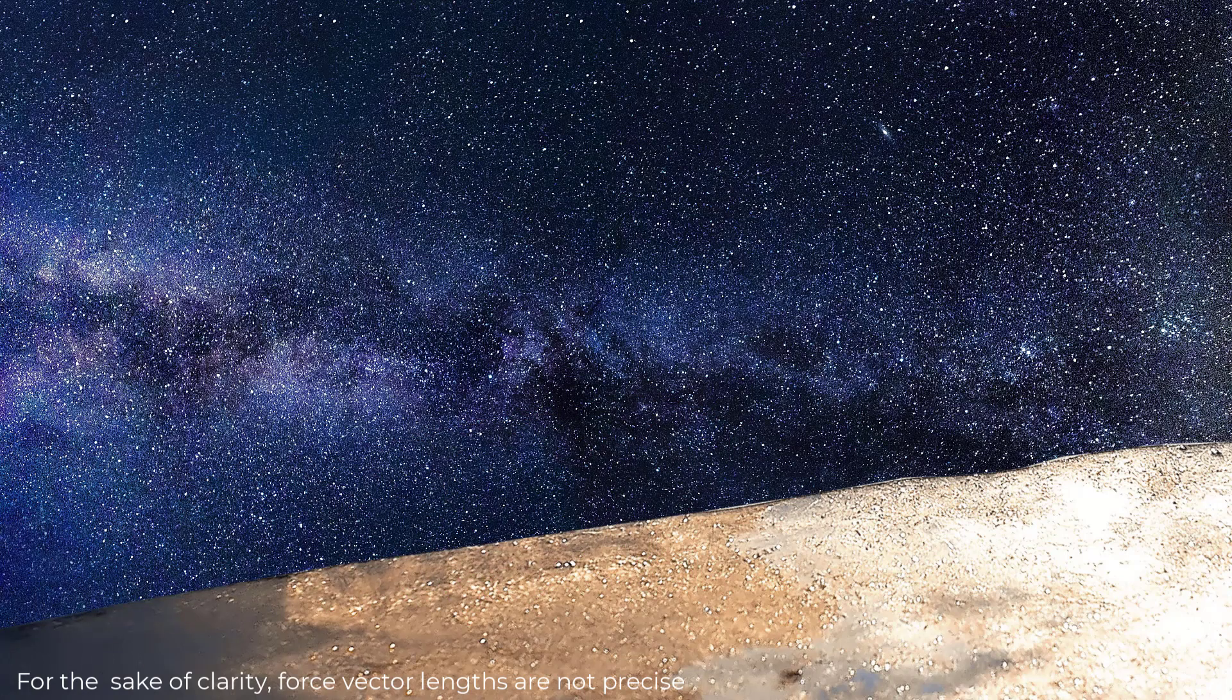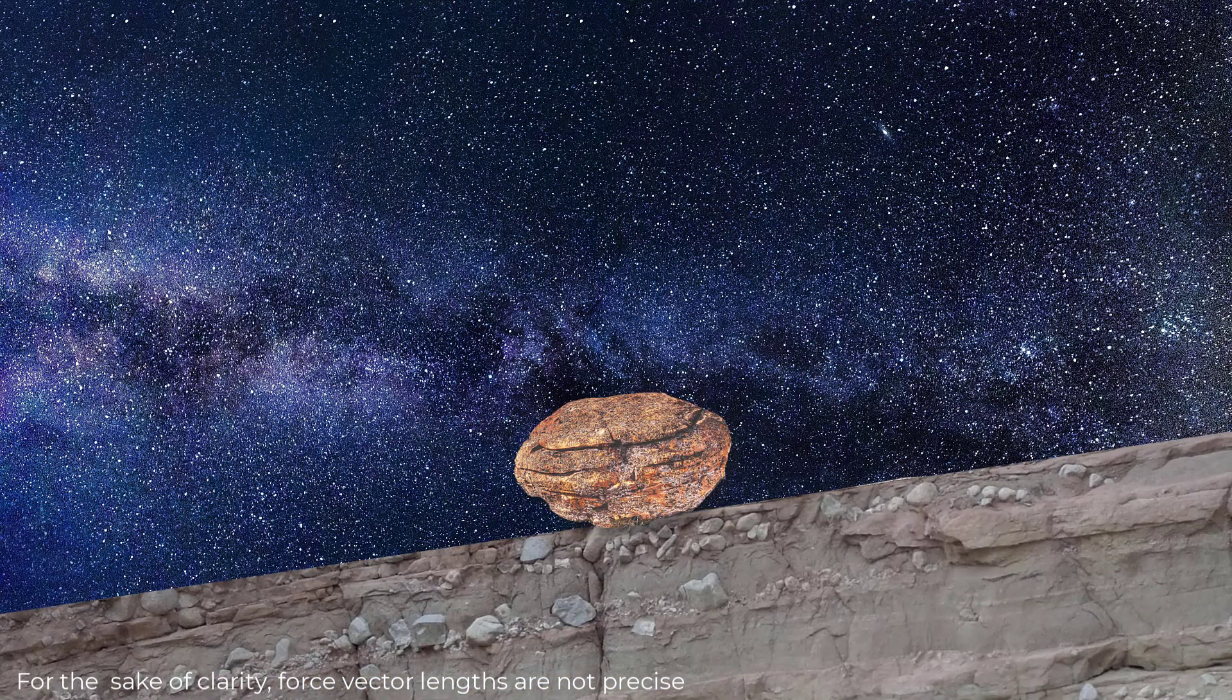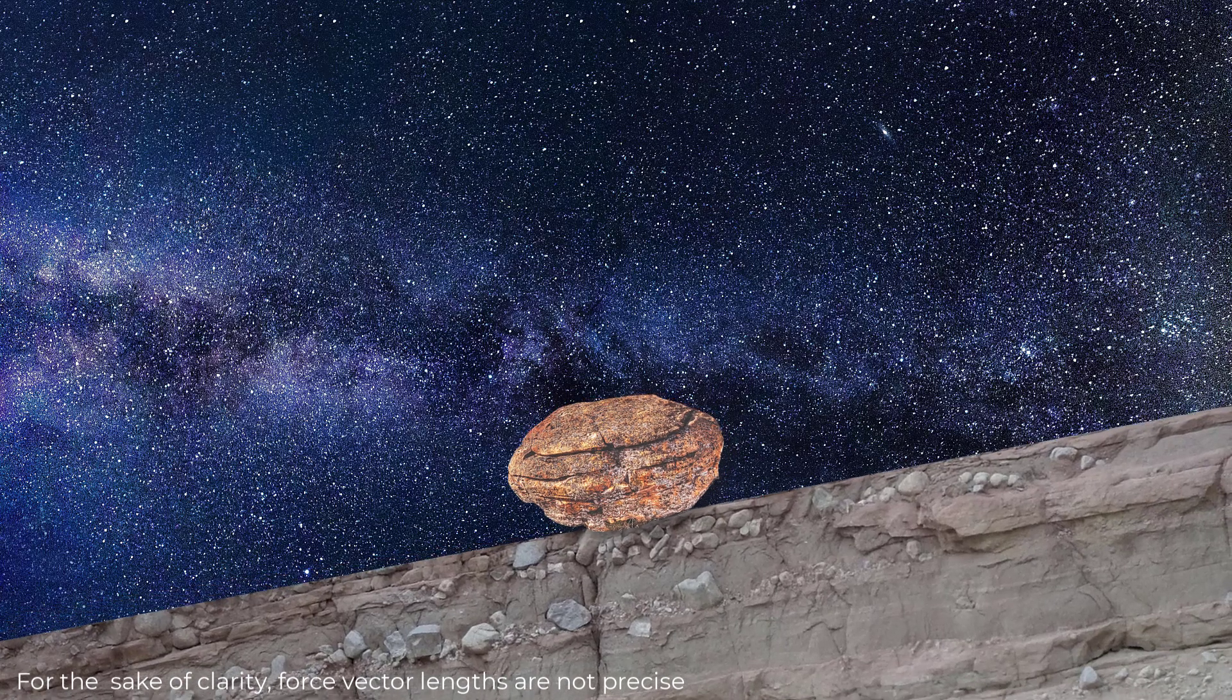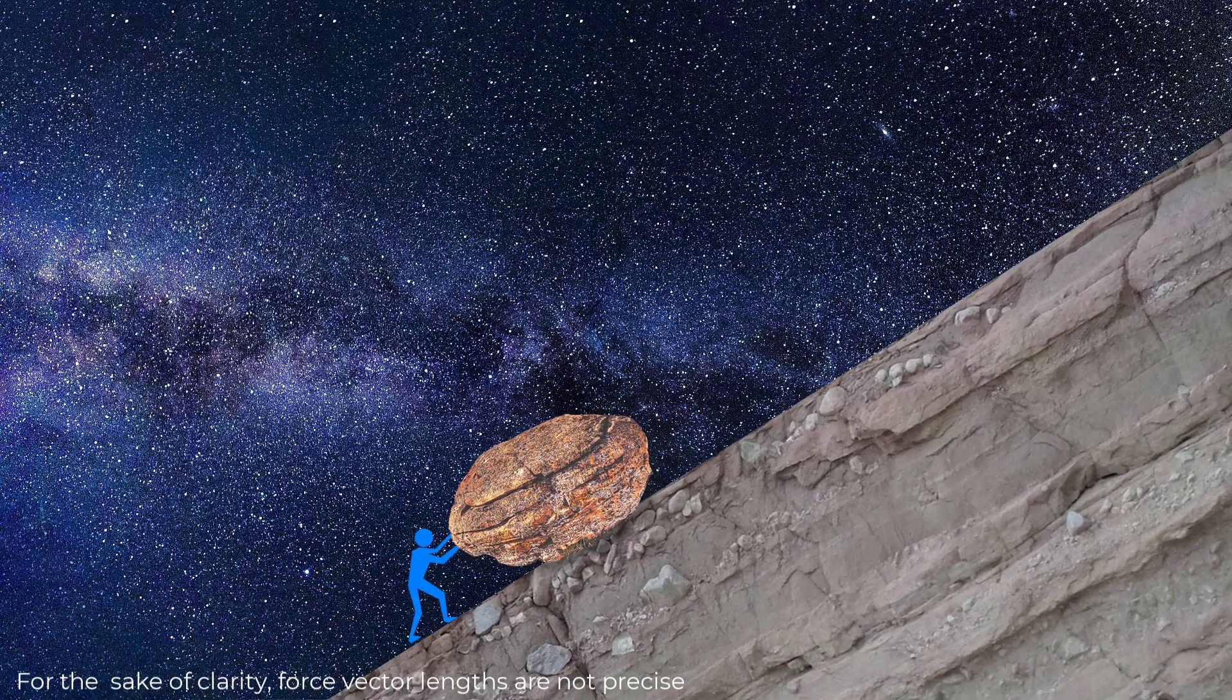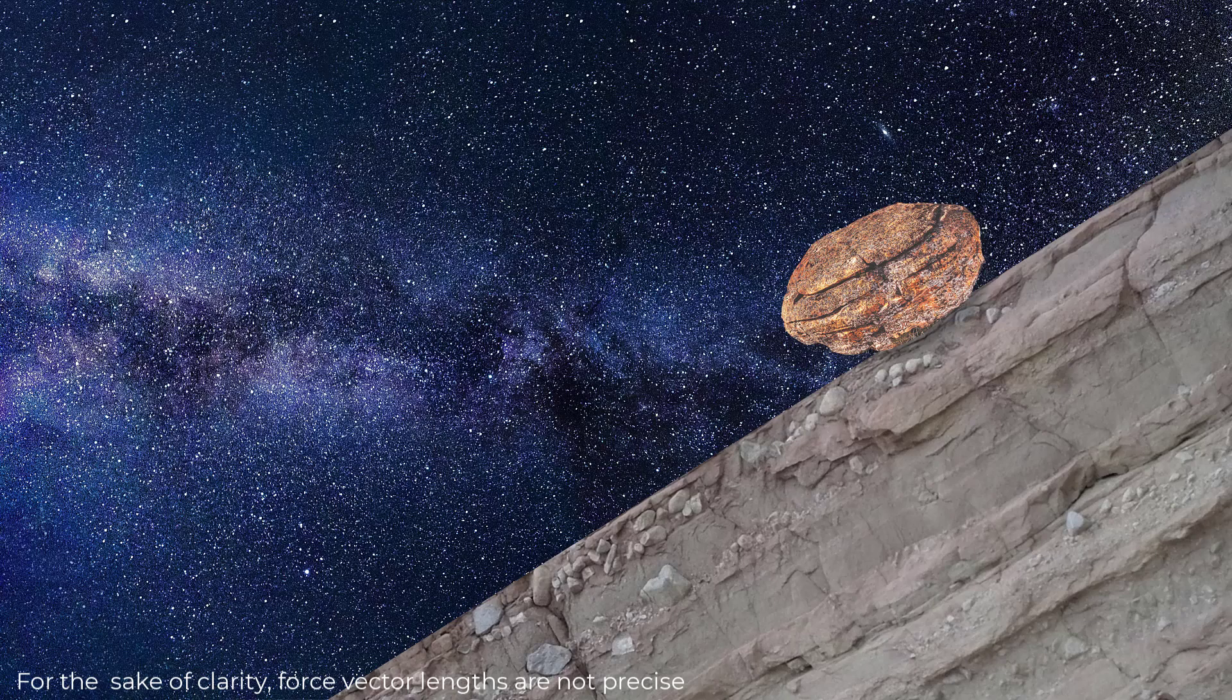But what if the rock was sitting on a solid rocky surface? You could probably increase the slope a lot more. Notice that the shear force arrow gets longer, indicating more force in the downhill direction, while the force that is holding the rock down to the surface gets shorter, indicating less force.